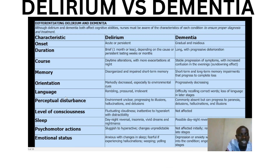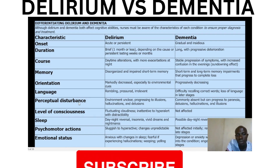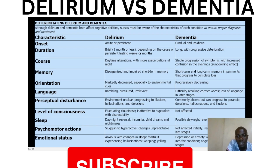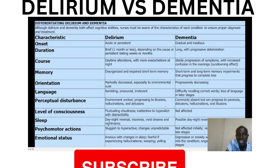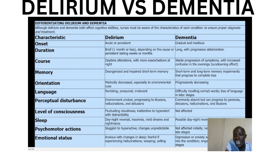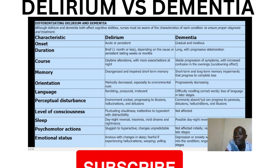When you look at perceptual disturbance, in delirium the environment is unclear, progressing to illusions, hallucinations, and sometimes delusions — someone may even be diagnosed as having positive symptoms of schizophrenia. In dementia, perceptual disturbances are commonly absent initially, but can progress to paranoia, delusions, hallucinations, and illusions.